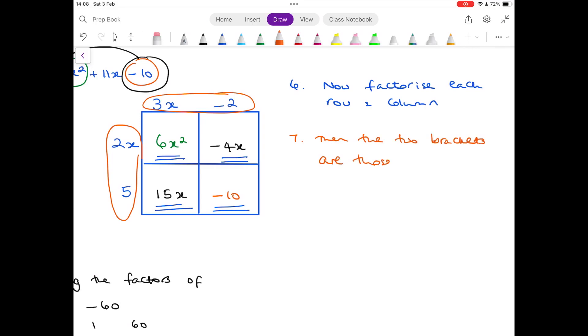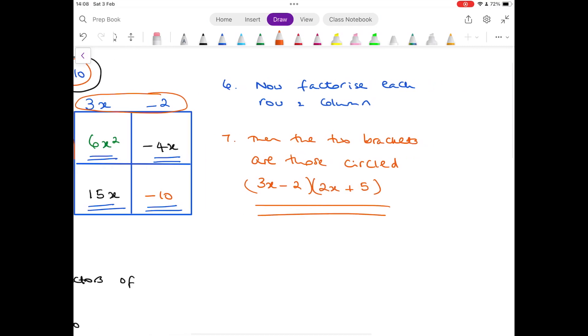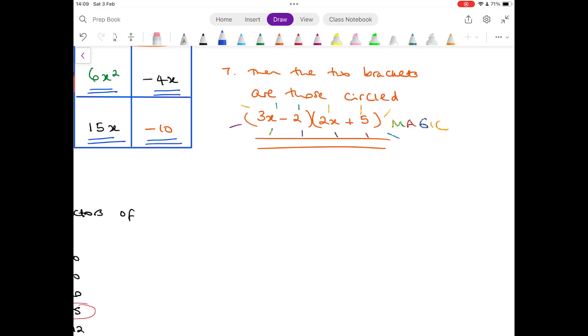How magic is that? So that's 3x minus 2 and 2x plus 5. And to check that, expand the two brackets.